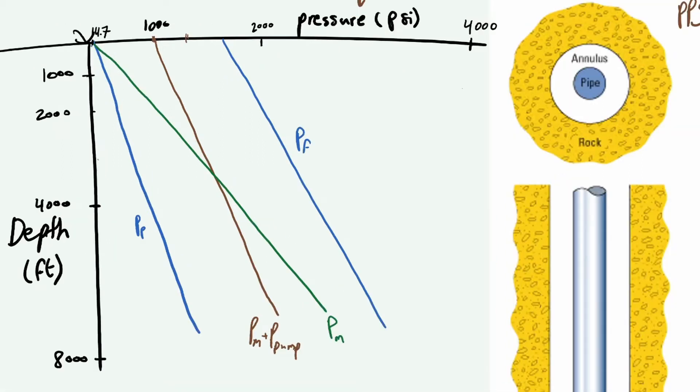To get the pressure gradient from this graph, you just pick a point at any point and then you see what the corresponding pressure is, and then you divide the pressure over the depth. Because the mud gradient is psi per foot, right? So psi is pressure from here, feet is depth from this axis.